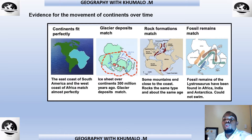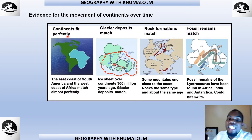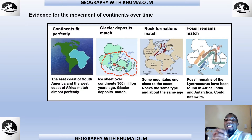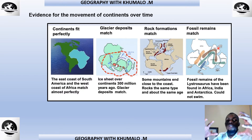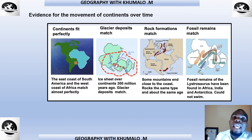What makes us believe this theory? We look at evidence for the movement of continents over time. The four pieces of evidence are: continents fit together perfectly like a puzzle; glacier deposits match across continents; rock formations match; and fossil remains match. These four pieces of evidence support the idea that the continents were once joined as one gigantic continent called Pangaea before drifting apart.